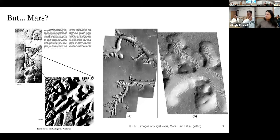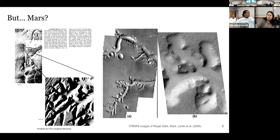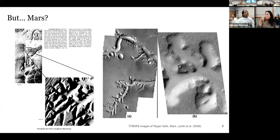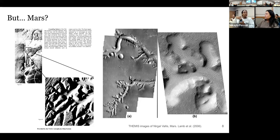That association with small sapping channels and their general morphology really drove researchers to associate these channels with similar processes of groundwater interactions forming these kinds of channels. Then came early orbital images of Mars. On the left you can see very similar images from Viking - the Viking mission - some of the first images of Mars. They found similar canyon morphologies on Mars. That really drove the understanding that groundwater has large implications for biospheres and past planetary habitability on Mars.